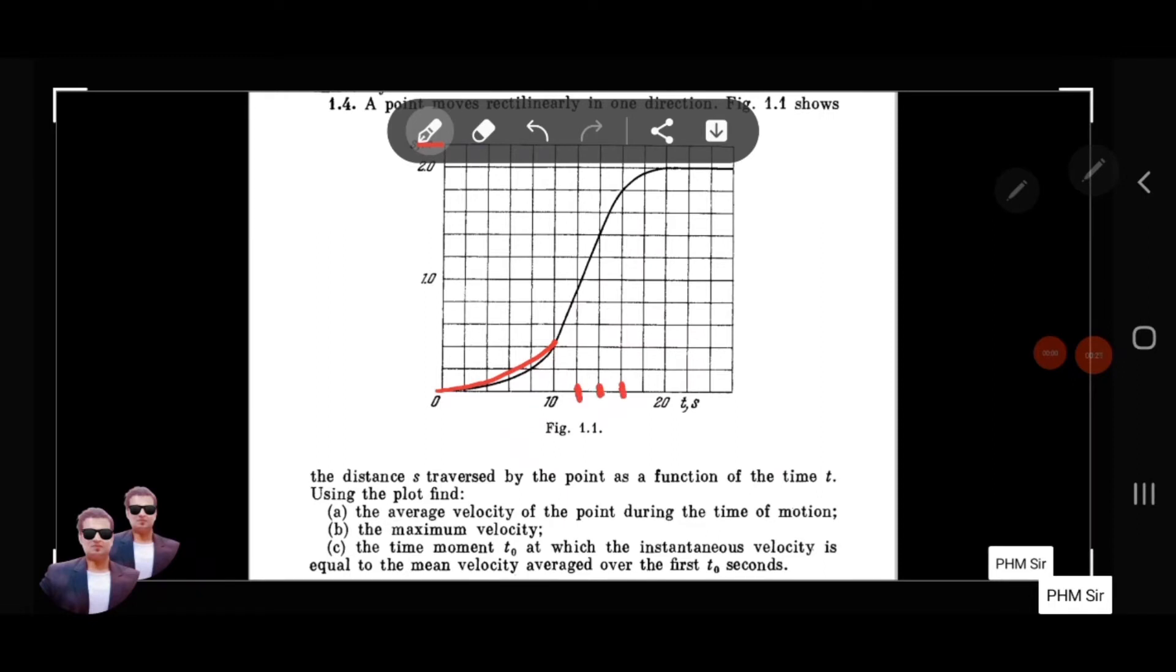The maximum slope occurs around 12, 14, 16 seconds. And then the slope starts decreasing. In the 0 to 10 range the slope is increasing, and in the 10 to 16 range it reaches maximum slope. So the maximum slope value will give us the maximum speed, which is the maximum velocity.